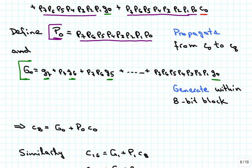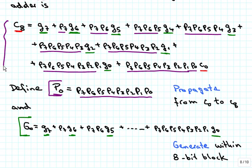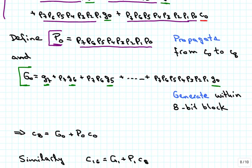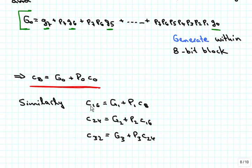We can simplify the full expression so that C8 equals capital G sub 0 plus capital P sub 0 times C0. Using the same approach, C16 equals G1 plus P1 times C8, C24 equals G2 plus P2 times C16, and C32 equals capital G3 plus capital P3 times C24.